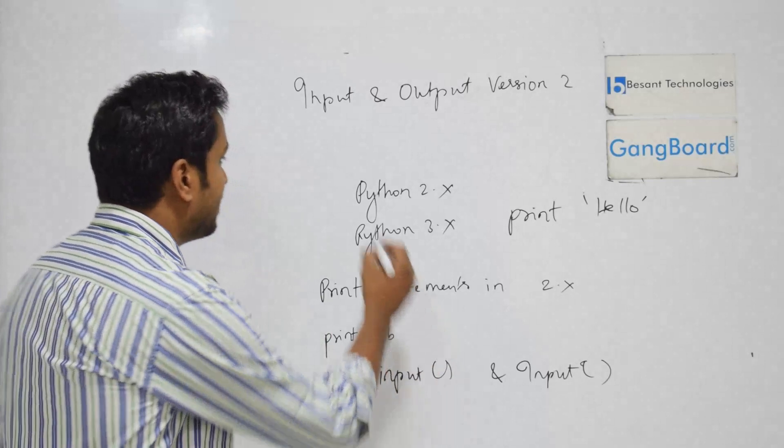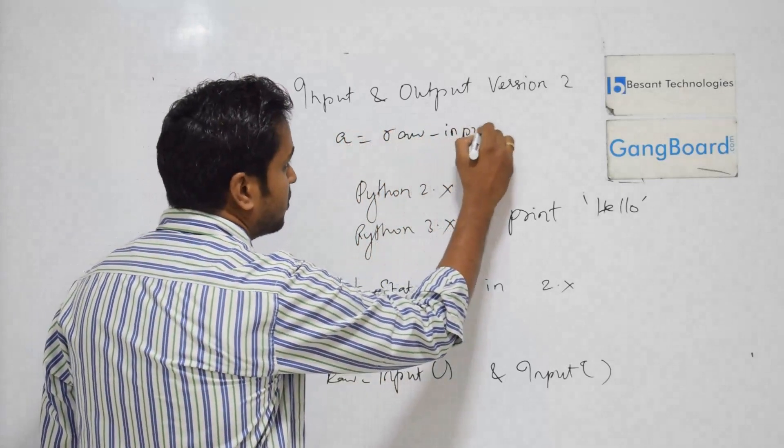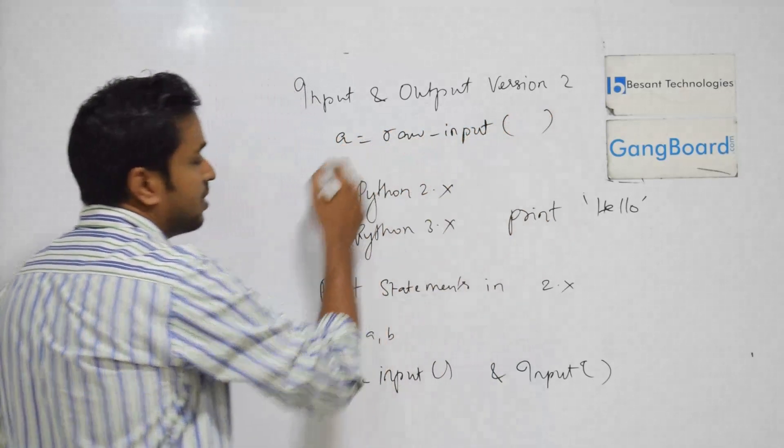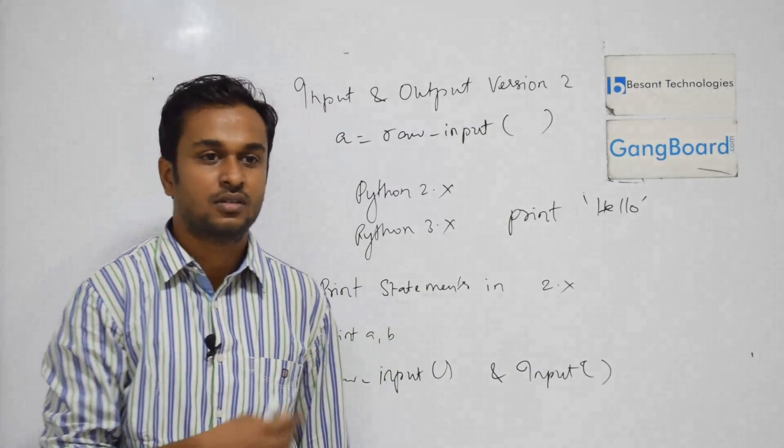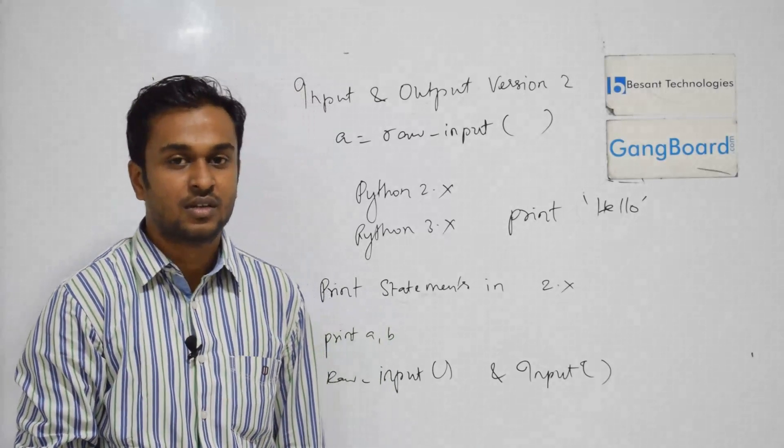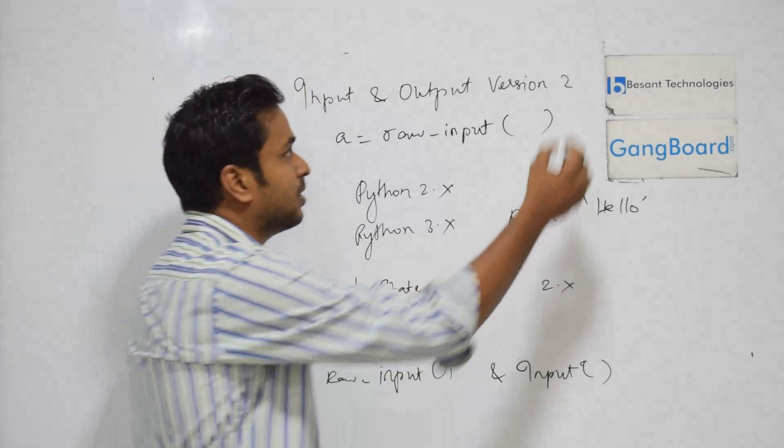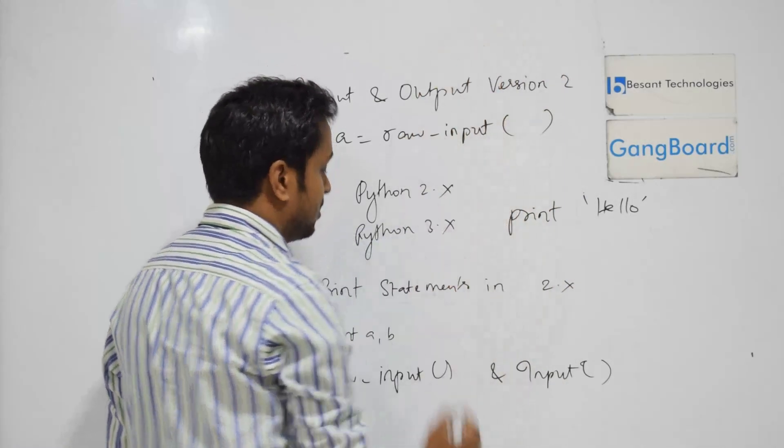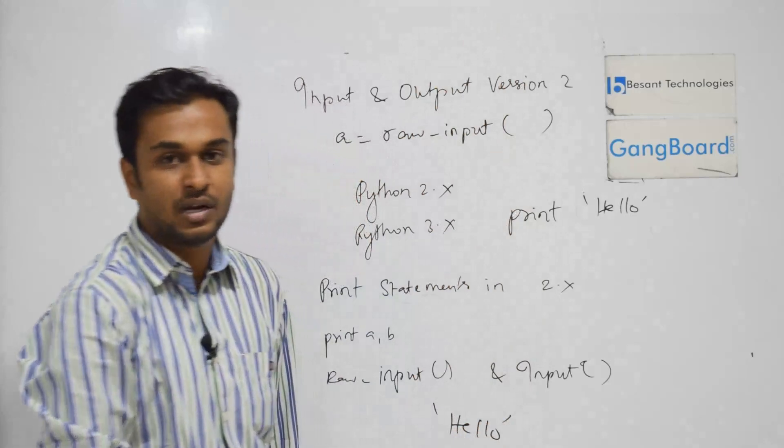For example, a equals raw underscore input. In the line interpreter, it will prompt you in the terminal to enter something. When you have terminal input like Hello, this will automatically be a string. In case I have a number 5, it will also be a string.